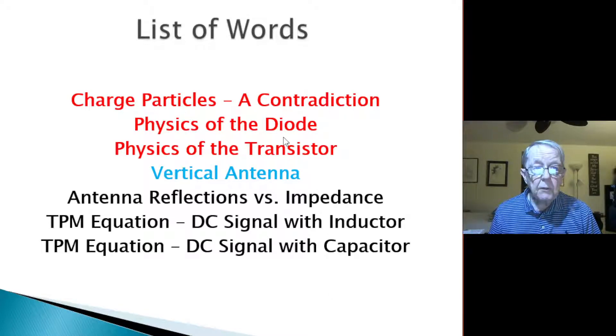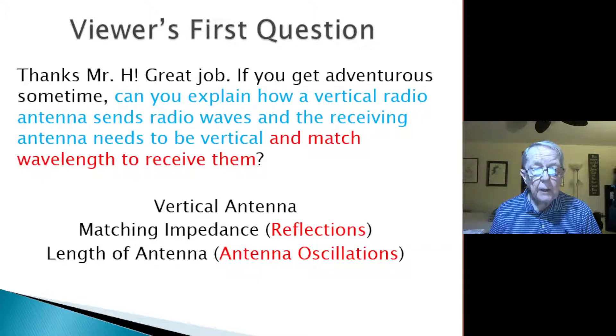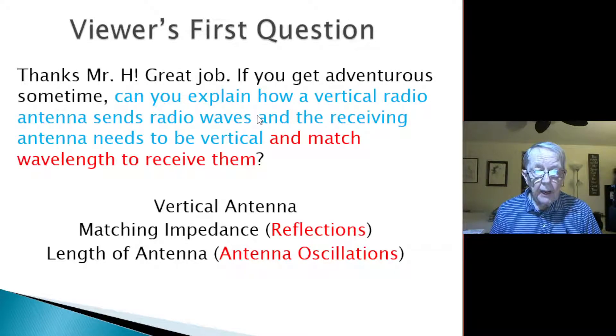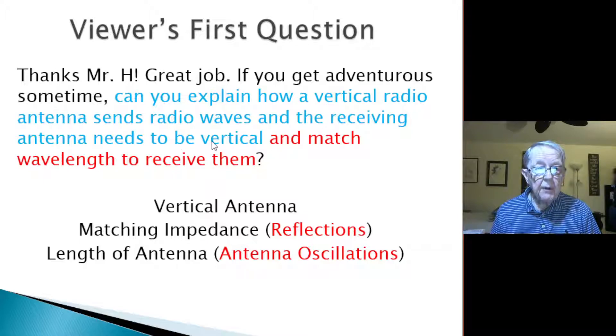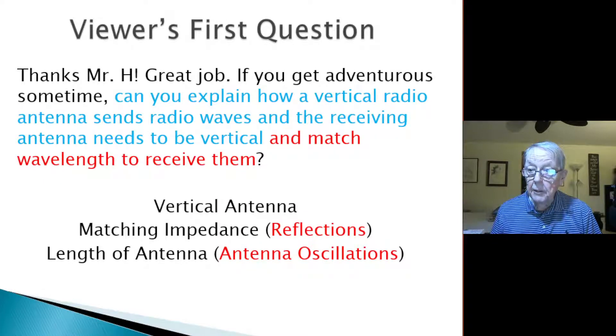I've been going through a list of words. Charge I went through recently, semiconductors, as I did the diode and transistor, and now it's the antenna, and in particular, why vertical antenna is recommended. And I will be going next time into reflections versus impedance. The viewer had asked a series of questions, but in this case, can you explain how a vertical radio sends radio waves? And the receiving antenna needs to be vertical and match wavelength. I'm not going to do wavelength today. I'm just going to do the vertical antenna and how the radio waves are sent using the particle model.